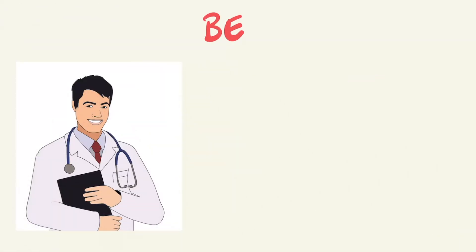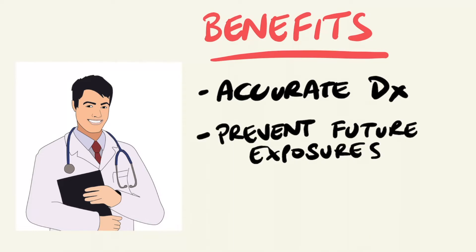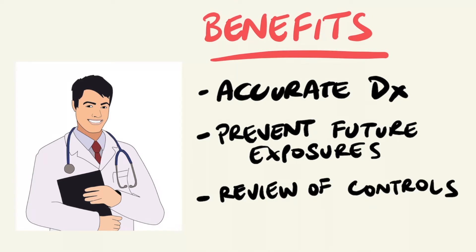The benefits of taking an occupational history: identifying that the cause of a worker's symptoms is related to a workplace hazard allows you to make an accurate diagnosis and hopefully influence the course of disease early by removing the exposure. You prevent further exposures to other workers, and depending on how serious the workplace injury was, it will likely lead to a review of the health and safety protocols in the workplace. There are certain scenarios where taking an accurate occupational history is important in identifying the cause of occupational-related injuries and illnesses.